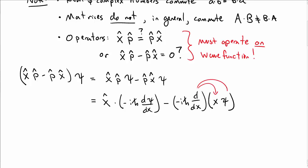So the first term is fine, but the second term I have to distribute the derivative through onto the x and the psi by the product rule. For the first term, I have minus i h-bar x d psi dx plus i h-bar psi plus i h-bar x d psi dx.